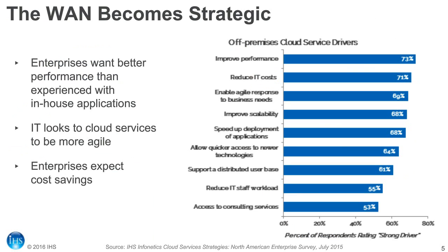The effect of off-premise cloud services on the WAN is significant. In our surveys, respondents indicated their top expectations: they want better performance from off-premise cloud services than from their in-house applications, greater agility in deploying applications, and cost savings across the board. This tells us clearly that the WAN has become very strategic for enterprises, and perhaps the old-style MPLS WAN needs a rethink.